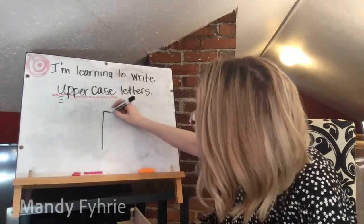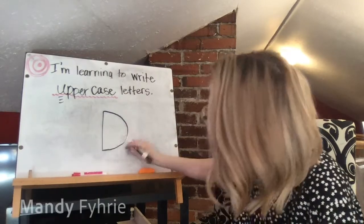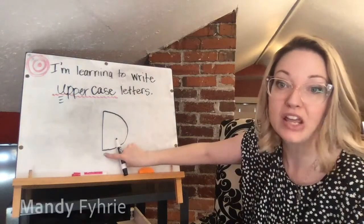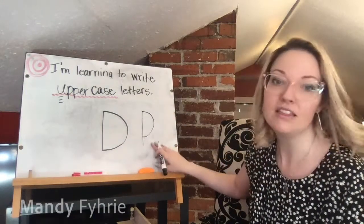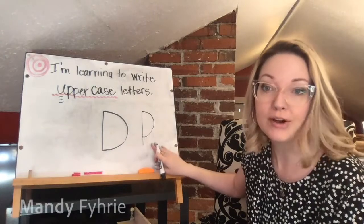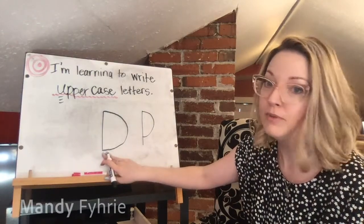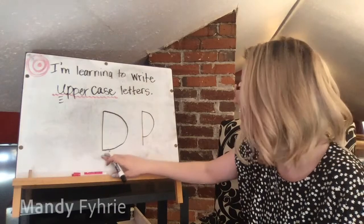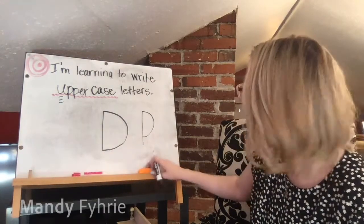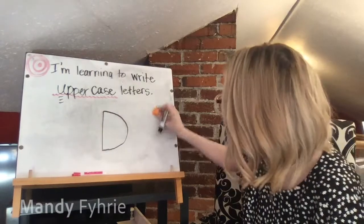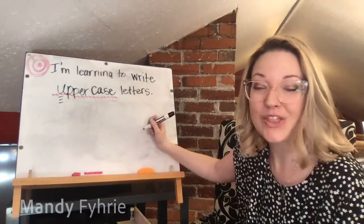Capital D: big line down, hop to the top, one big curve. Make sure it's closed at the right side — if it's open too much, I might think you're writing the letter P. Try to get it as close as possible; you can erase any extra lines if needed.